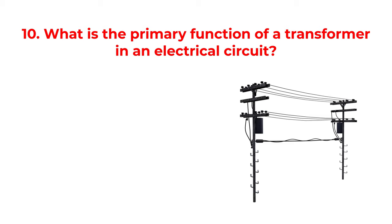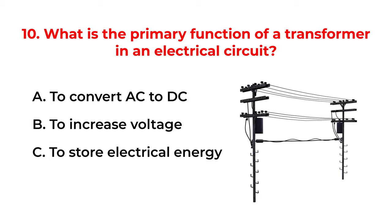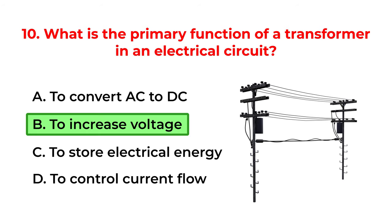What is the primary function of a transformer in an electrical circuit? A. To convert AC to DC. B. To increase voltage. C. To store electrical energy. D. To control current flow. The correct answer is option B: To increase voltage.